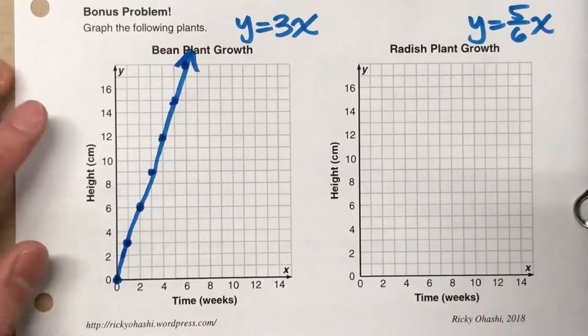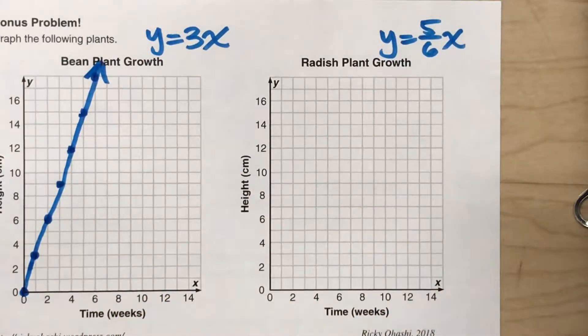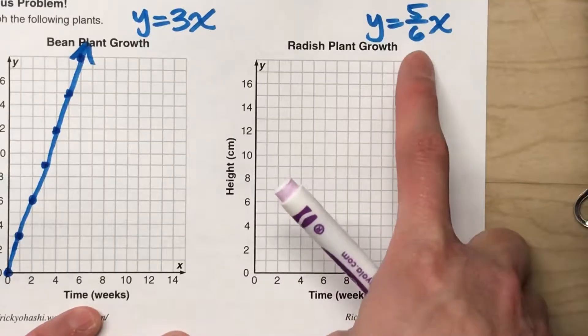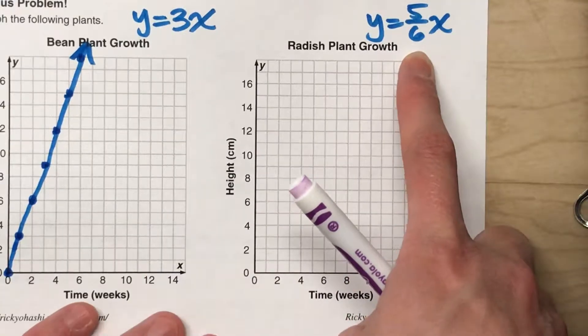All right. But the second example we did today in class was a fraction, y equals 5 sixths. And this one was for the radish plants. So this tells us that it's growing 5 sixths of a centimeter per week.